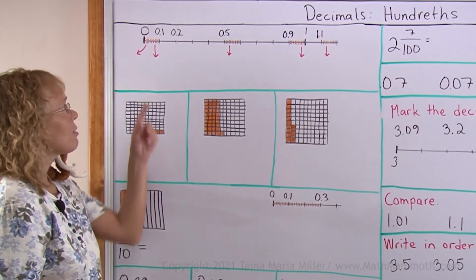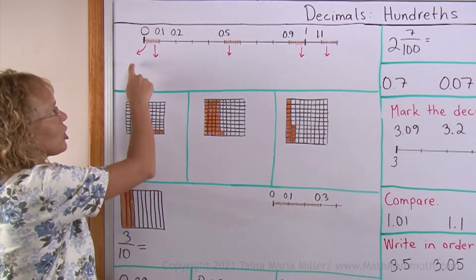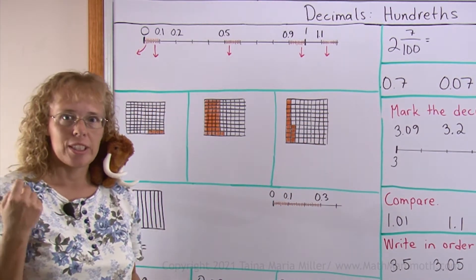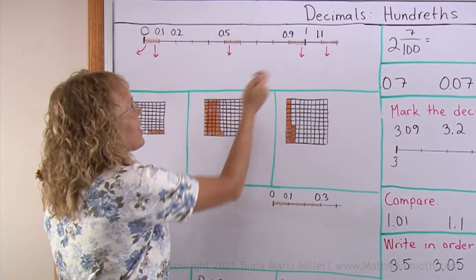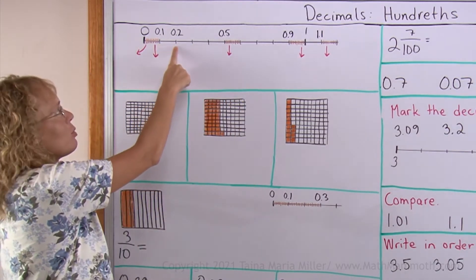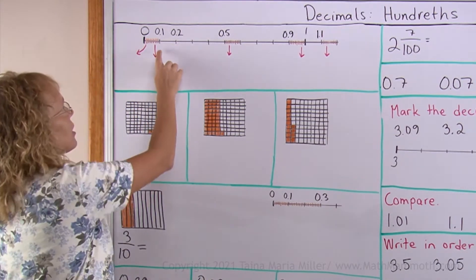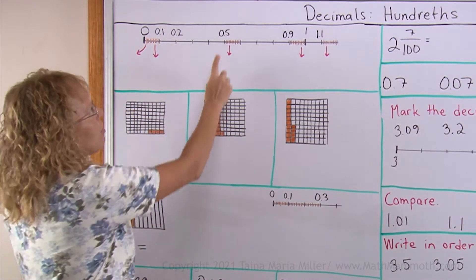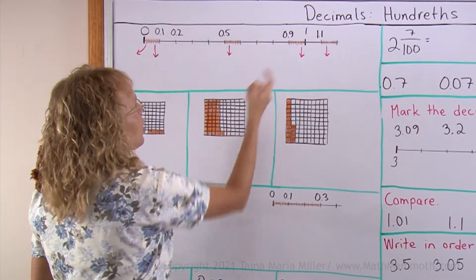I drew here a number line from 0 to 1 and a little bit beyond. And initially the number line is divided into 10 parts. These are these bigger tick marks here, are for the tenths. So here's 1 tenth, 2 tenths, 3 tenths and so on. And as you already know, 1 tenth is written as 0.1 or 5 tenths is written as 0.5 here and so on.